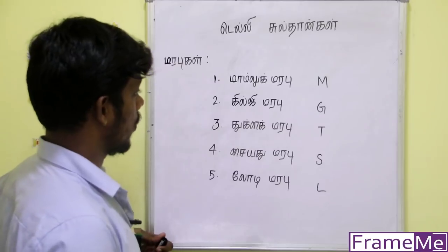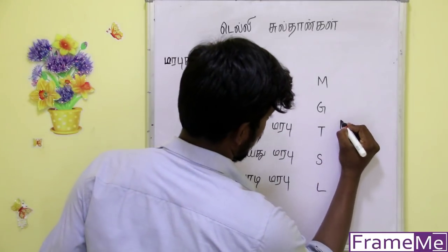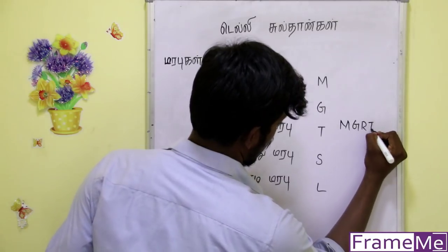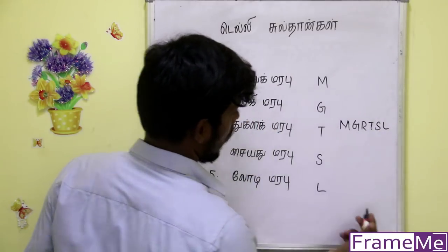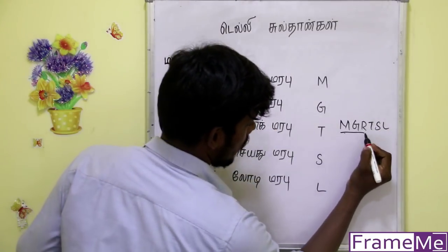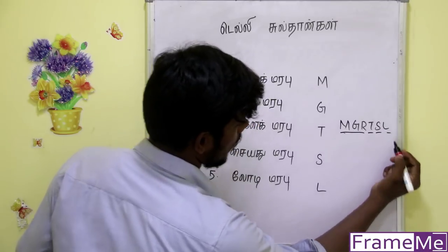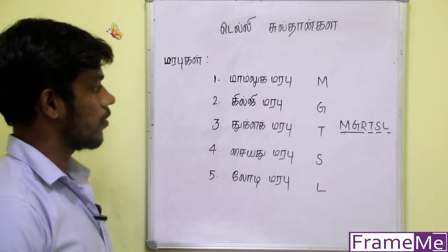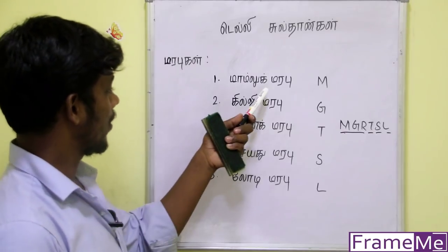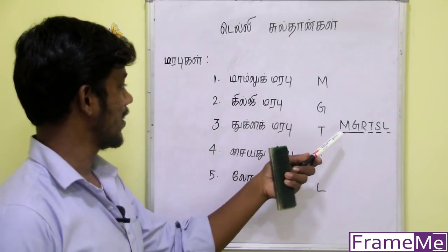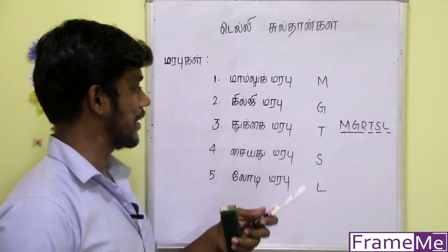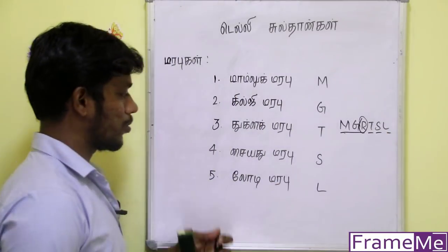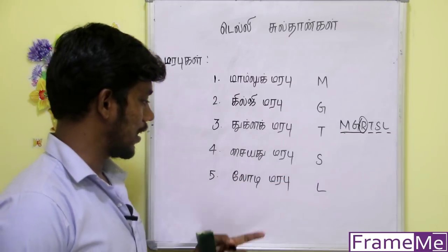Let's talk about the shortcut — MgRTSL. Let's talk about MgRTSL super leader. If you have a shortcut, G is Gilji, T is Tuklak, S is Sayad, L is Lodi.